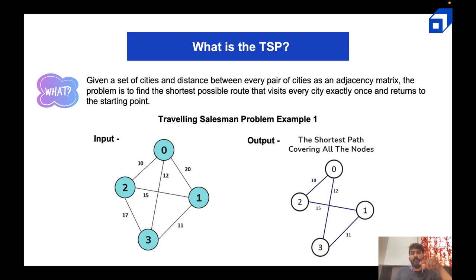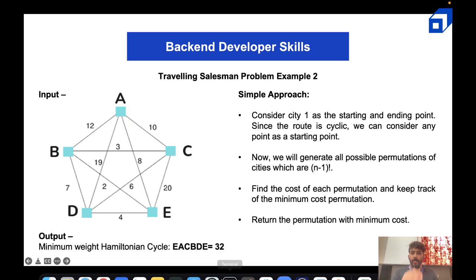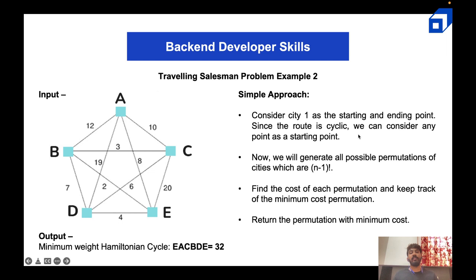From the starting point you visit all the cities and come back to the starting point with the shortest total path covering all nodes. In the second example, the input has five cities: A, B, C, D, E. The route is cyclic so it doesn't matter if he starts from A, D, B, or C — we can consider any point as the starting point, though they have specified zero as the starting point.